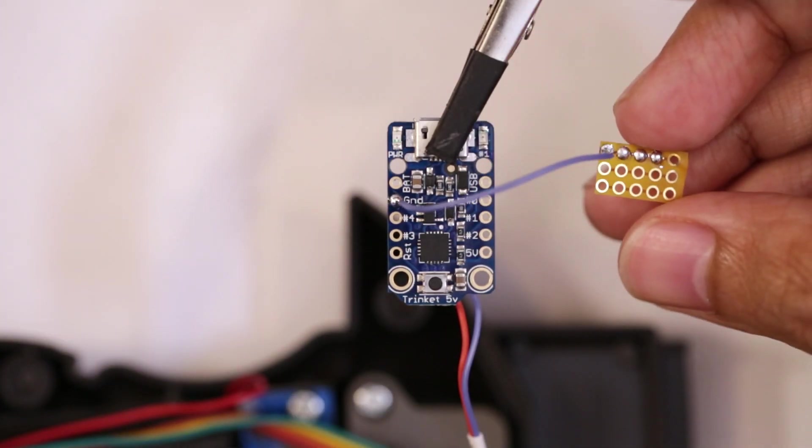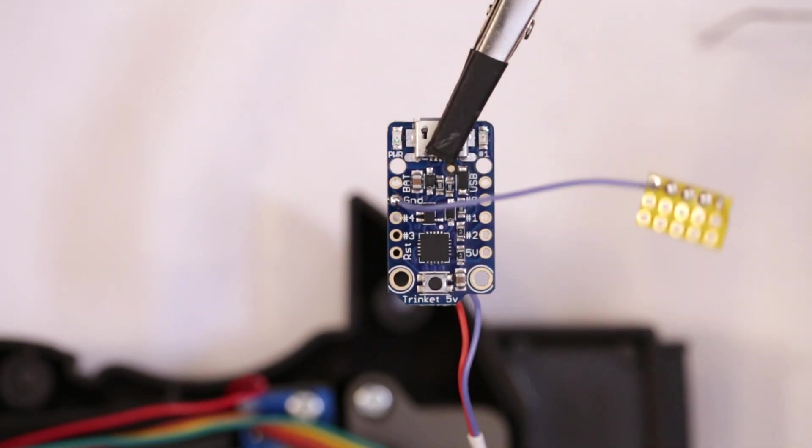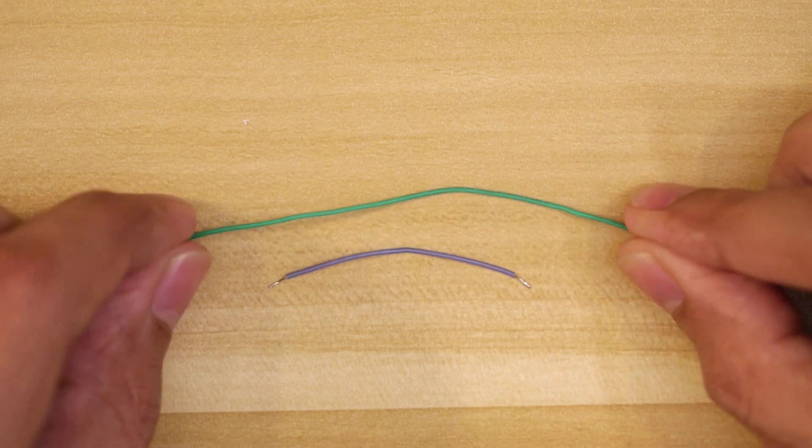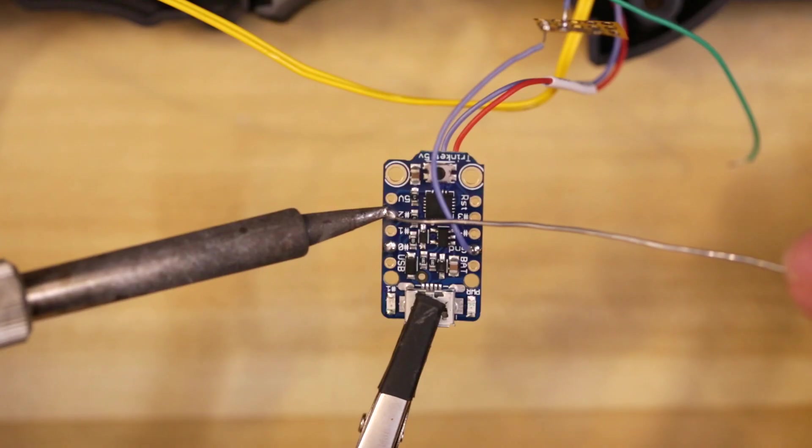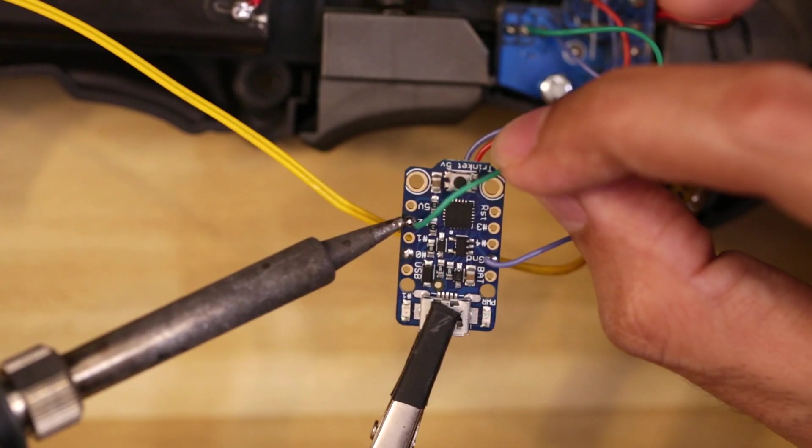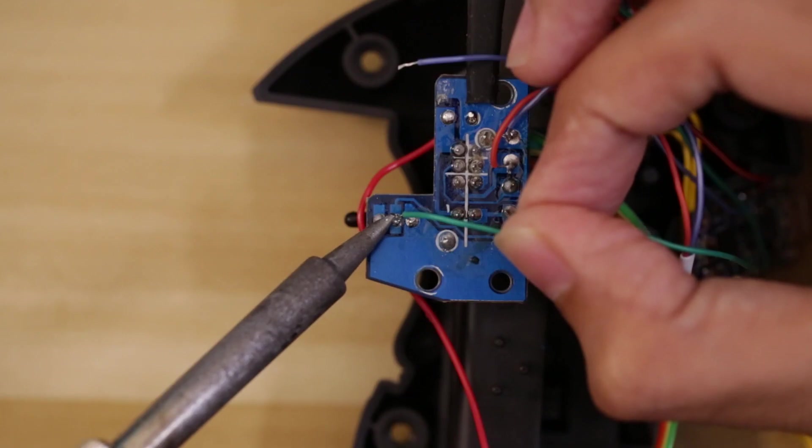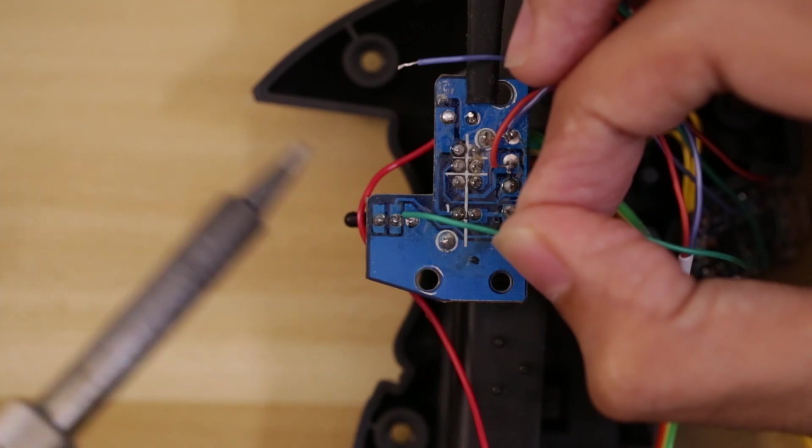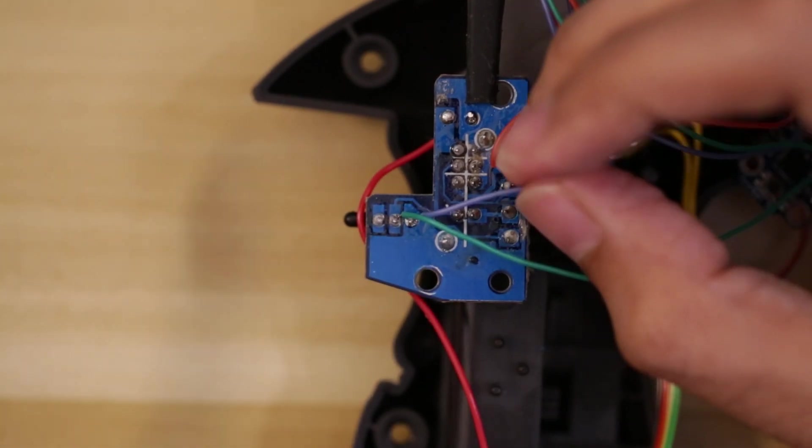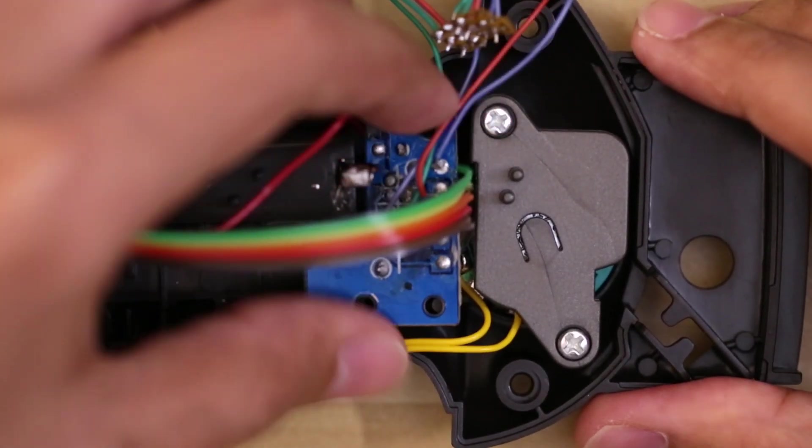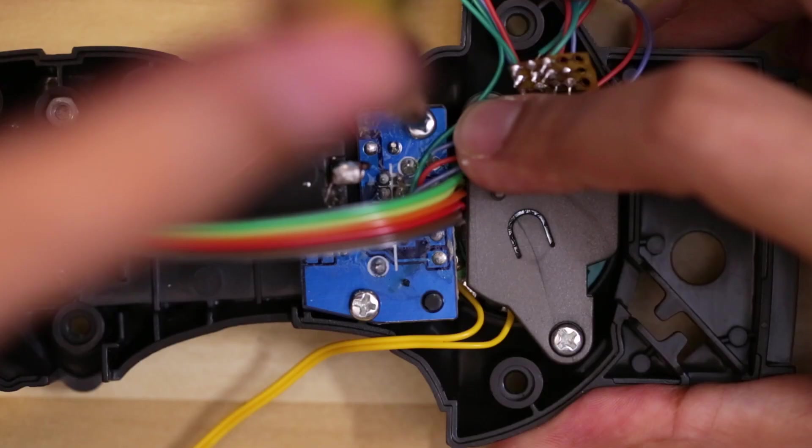Next, I can work on the connections for the trigger button. I'll need two more wires, one for ground and the other for signal. Connected one wire to pin number two on the Adafruit Trinket and the other to the ground on the flexible PCB. Then, the trigger pin on the switch PCB to pin number two. I also connected the ground wire here. I put the PCB back into the handle and fastened the two screws to mount it back into place.